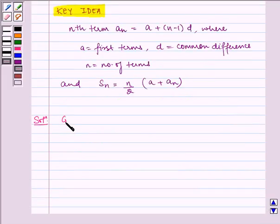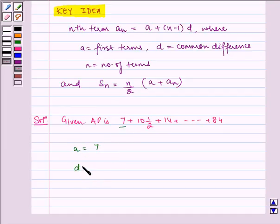Given AP is 7 plus 10½ plus 14 and so on till 84. Here a equals 7, d equals 10½ minus 7, which is equal to 21/2 minus 7, which equals 7/2.